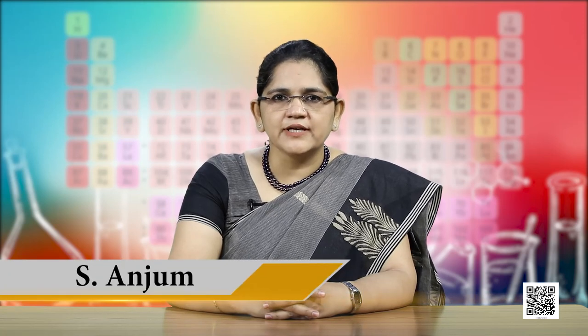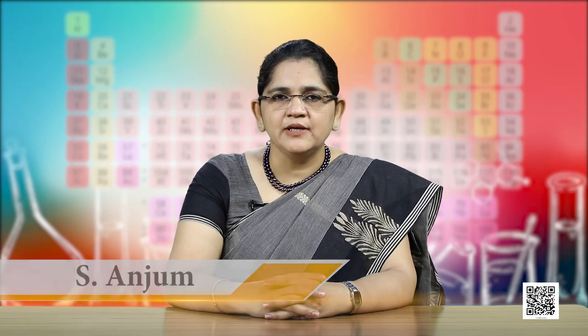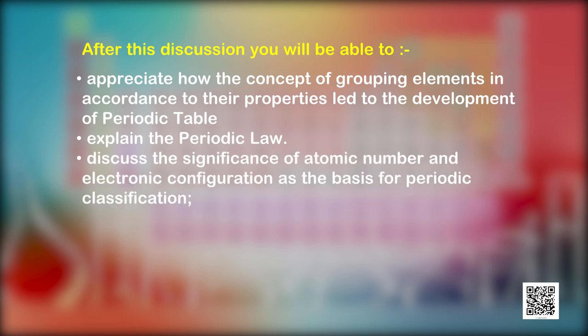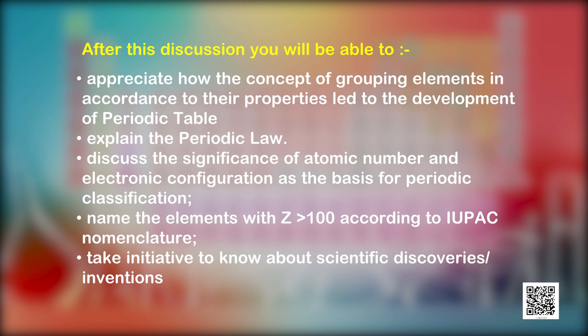Hello students. Let us discuss why scientists feel the need to classify elements, the various historical developments leading to the modern periodic table, and how periodic classification follows as a logical consequence of the electronic configuration of atoms. After this discussion, you will be able to appreciate how grouping elements according to their properties led to the development of the periodic table, explain the periodic law, and discuss the significance of atomic number and electronic configuration as the basis for periodic classification.